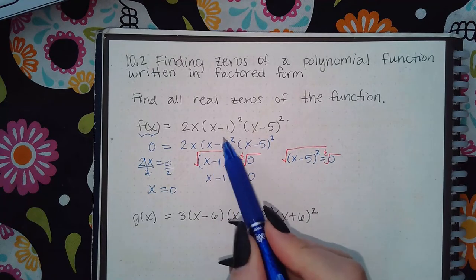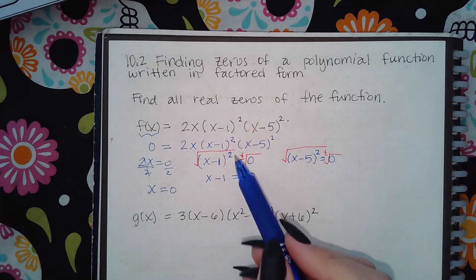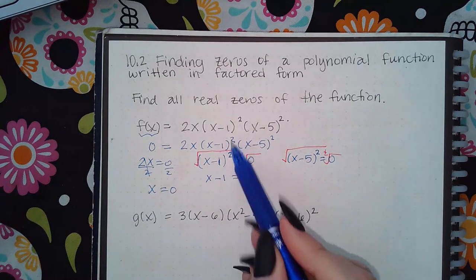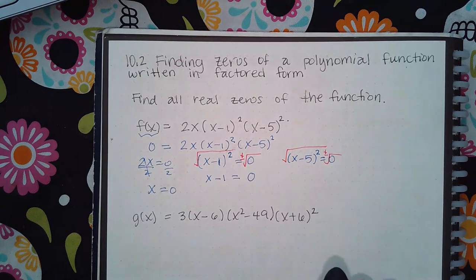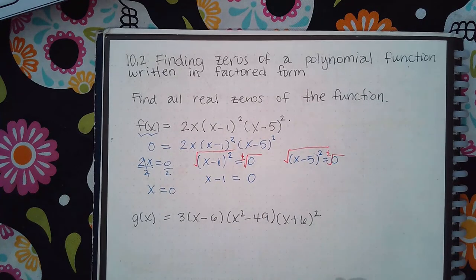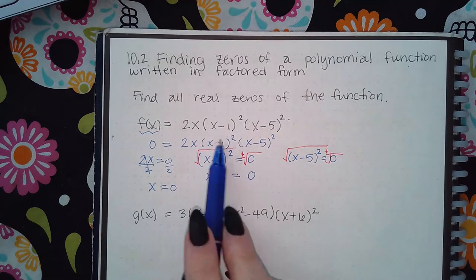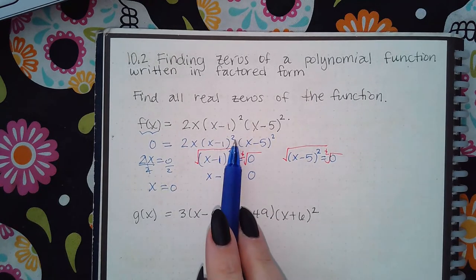...taken what was inside the parentheses equal to zero, I get the exact same thing as I would have if I took the whole factor with the square equal to zero. So to save space on your paper and save time in the future, we only take what's inside the parentheses on the factor. We don't need to take the exponent.